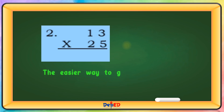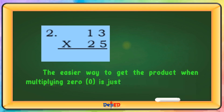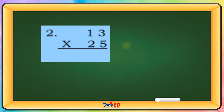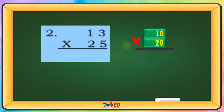The easier way to get the product when multiplying with zeros is just to write the two zeros and multiply the whole number. 13 will be rounded to 10 and 25 will be rounded to 20. 10 times 20 equals — we will just copy or write these two zeros below. And then multiply 2 times 1 equals 2. Two hundred.